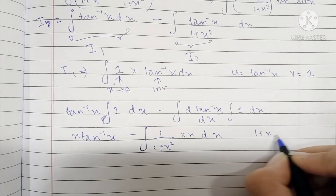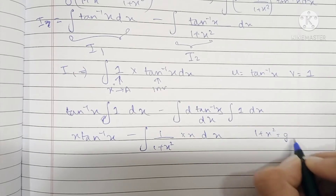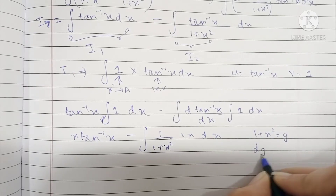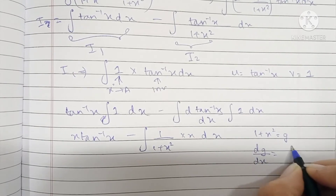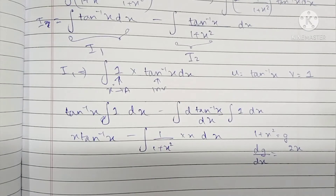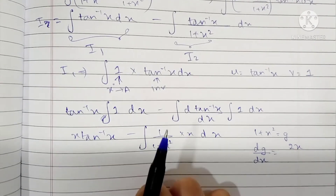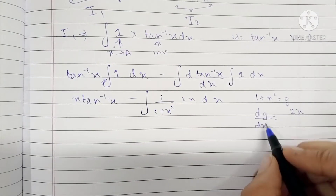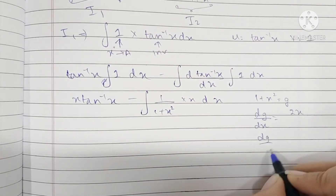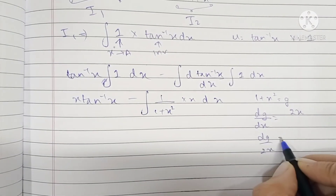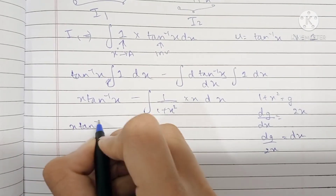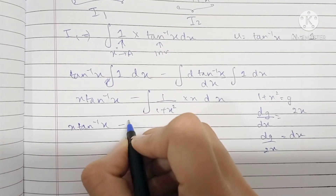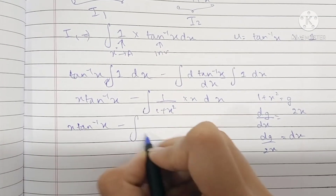Now let's place 1 + x² as g. dg/dx becomes 2x, because the differentiation of 1 is 0 and the differentiation of x² is 2x. So dg/(2x) becomes dx.